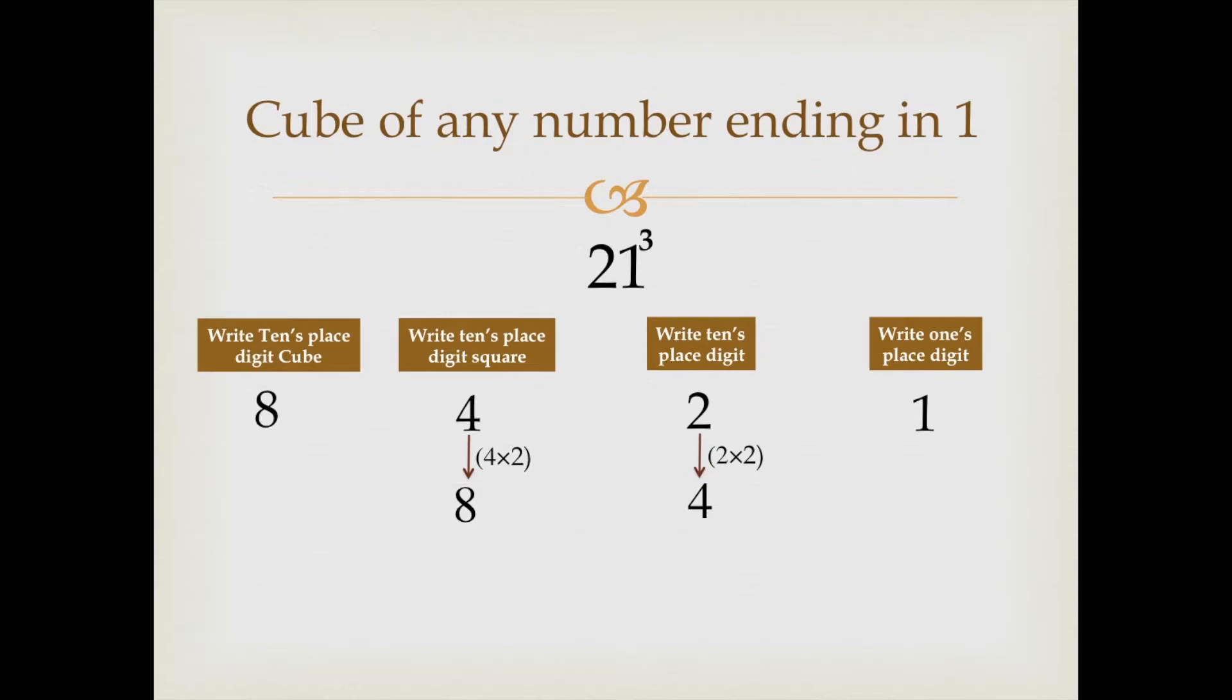Now, we will write the answer from right to left. Write down the last digit which is 1 as it is. Now, 2 plus 4 makes 6. Write 6.